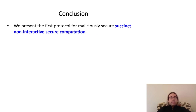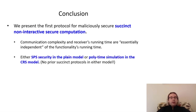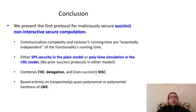In conclusion, we present the first protocol for maliciously secure non-interactive secure computation with an additional succinctness property — that is, that the communication complexity and receiver's running time are essentially independent from, that is, polylogarithmic in, the functionality's running time. We achieve both superpolynomial time simulation-based security in the plain model and security with polynomial time simulation in the CRS model. No succinct protocols were known in either model prior to ours. Our protocol combines FHE and delegation in a relatively intuitive way and leverages a non-succinct inner secure computation protocol to attain security. Moreover, all of these primitives, and thus our protocol, can be based on the hardness of the learning with errors assumption. Thank you very much for listening and I will be able to take questions during the live part of the conference.